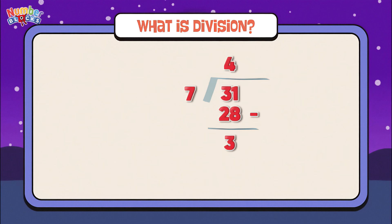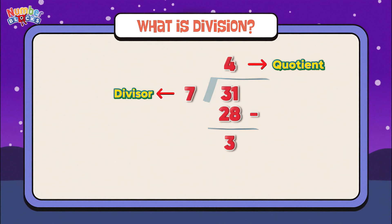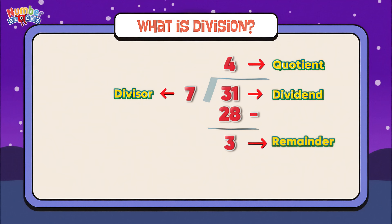Herein seven is the divisor, and four is the quotient. Thirty-one is the dividend, and three is the remainder.